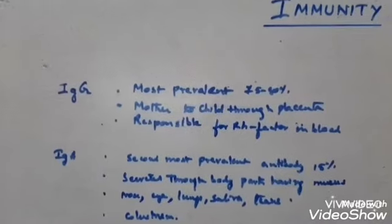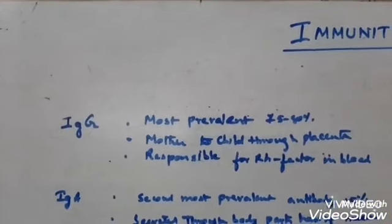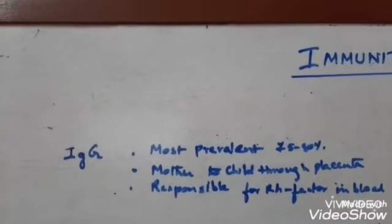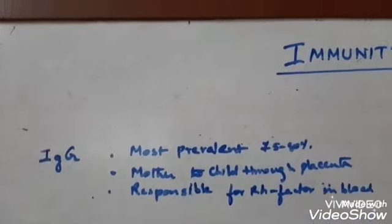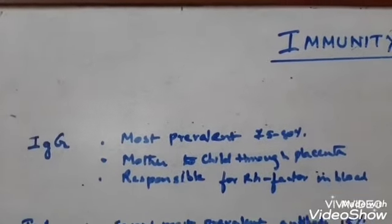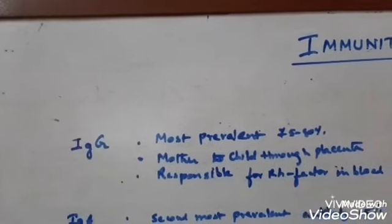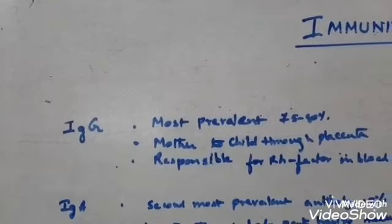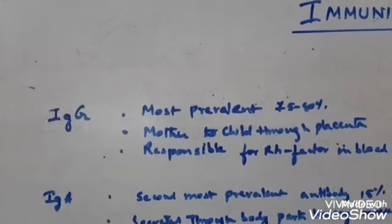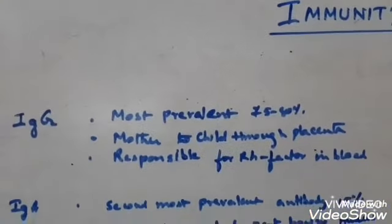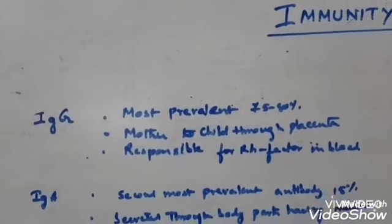IgG — immunoglobulin G — is the most prevalent immunoglobulin, comprising 75 to 80 percent of the total antibodies produced in the body. Its functions include protecting against fungal and bacterial toxins, crossing the placenta to provide immune protection to the newborn baby, and being responsible for the Rh factor in blood (Rh positive and Rh negative blood groups).